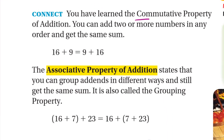Before, we learned the commutative property of addition. For example, 16 plus 9 is the same as 9 plus 16 — both equal 25. So if you change the order, the sum will be the same.